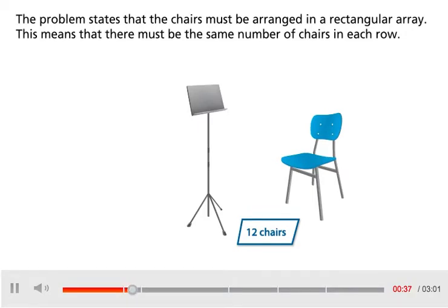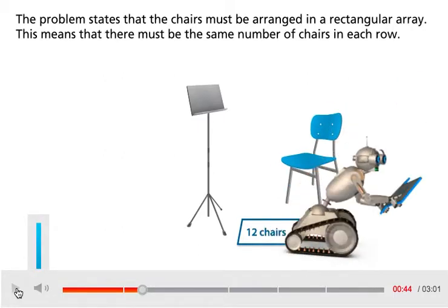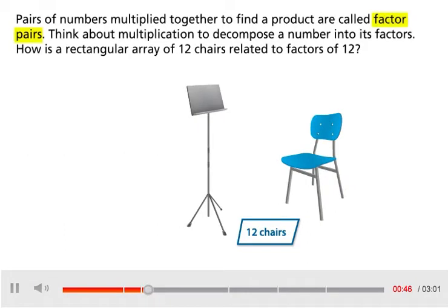The problem states that the chairs must be arranged in a rectangular array. This means that there must be the same number of chairs in each row. Pairs of numbers multiplied together to find a product are called factor pairs. Think about multiplication to decompose a number into its factors.